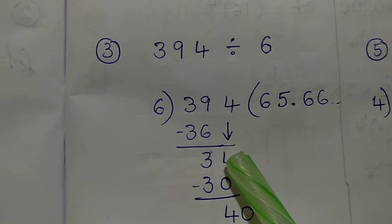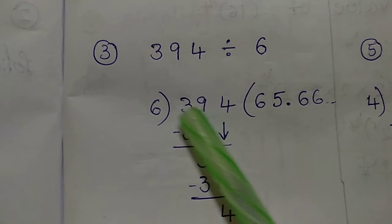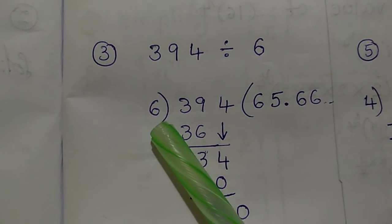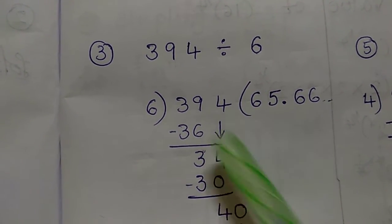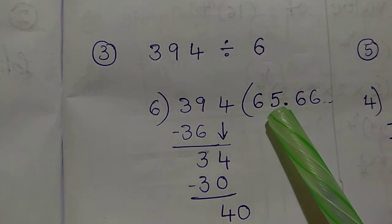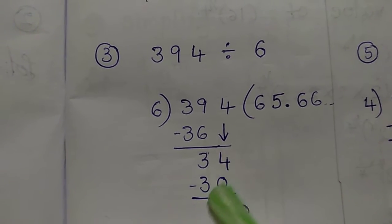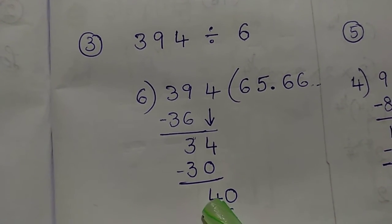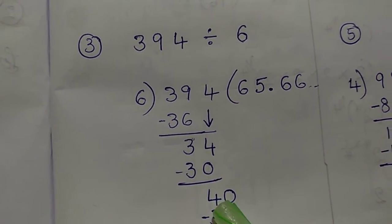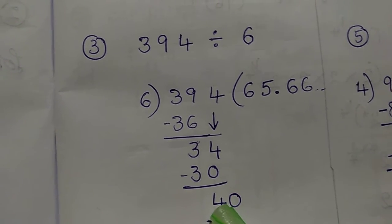We prefer this 3. Now we have 34. Next we use the 6 times table. 6 times 5 is 30, so we have 6, 5. We have 34 minus 30. So we have 4. Now we have 4 remaining. Next, we don't know the next number yet — 4 in the 6 times table, so we write 0.